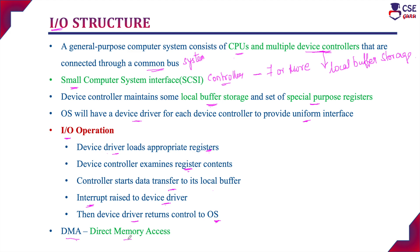In DMA, only one interrupt is generated per block to inform the device driver that the operation is completed. In direct memory access, the CPU is not required for every operation — the device controller performs all these operations without CPU intervention, so the CPU can be used for other fruitful work. In high-end systems, switches are used rather than bus architecture, allowing multiple components to communicate concurrently without competing for memory cycles on a shared bus. This makes DMA even more effective in high-end systems.